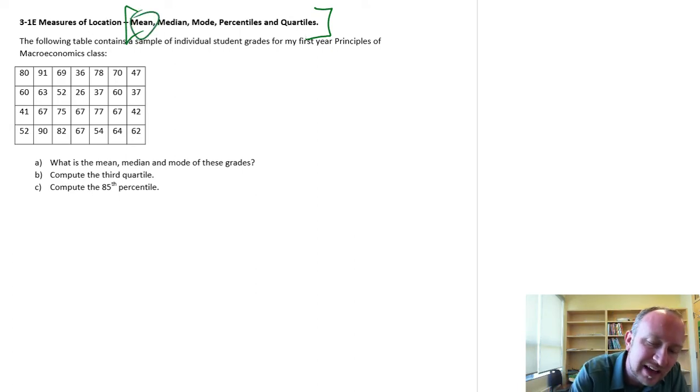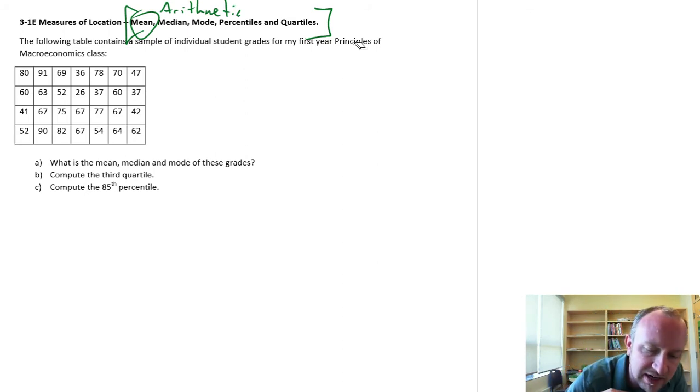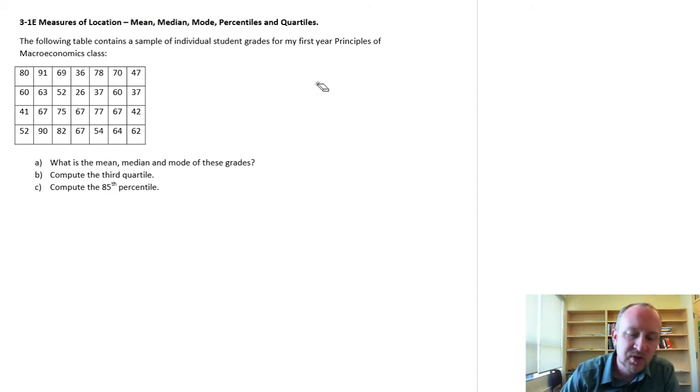So in this case, the mean that we're describing is going to be the arithmetic mean, where we're adding observations together and dividing by the number of observations. We're working with a data set that consists of individual student grades from my first year principles of macroeconomics class. So we have a few different things that we're going to do.